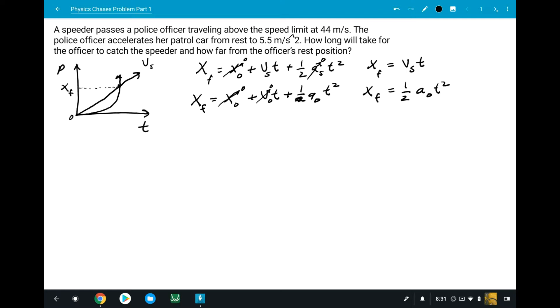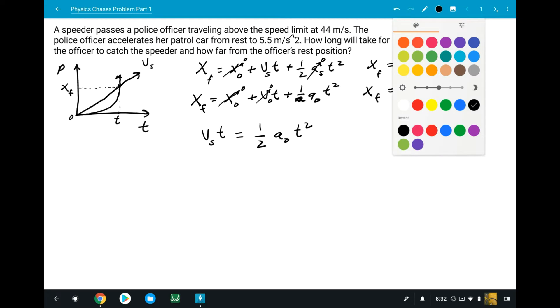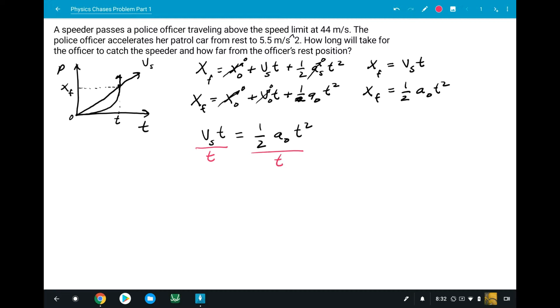So since they're at the same distance, we can now determine this t that the two will have for that distance that they're going to meet at. So since this is equal, it'll be vs*t = 1/2*ao*t². So let's solve for t. But what's sweet is that we can divide t out on both sides. Therefore, this t is gone for the speeder and one of the t's is gone for the officer's acceleration.